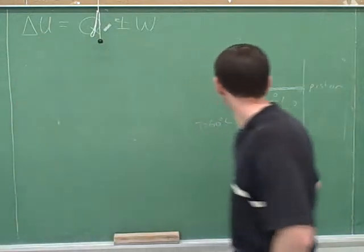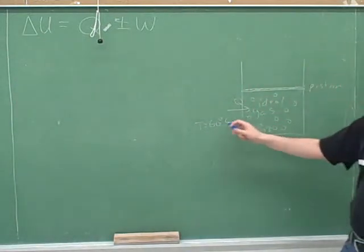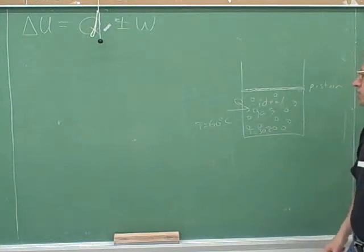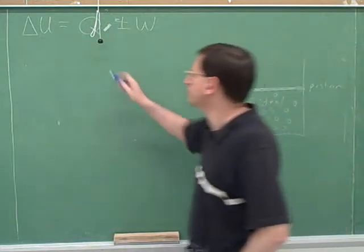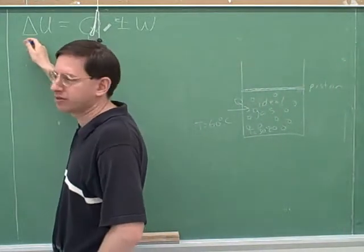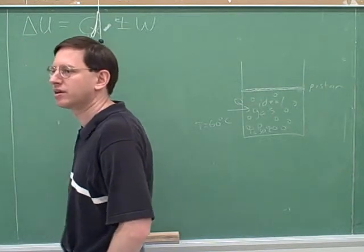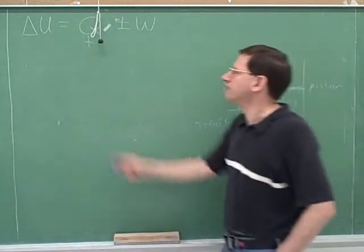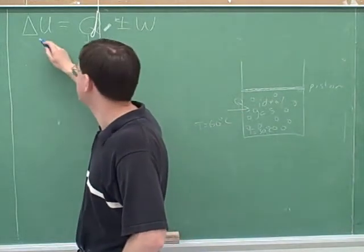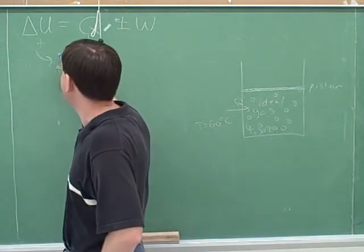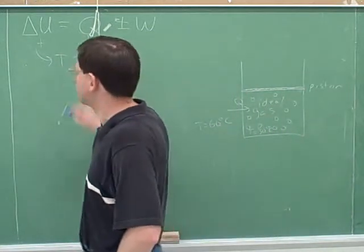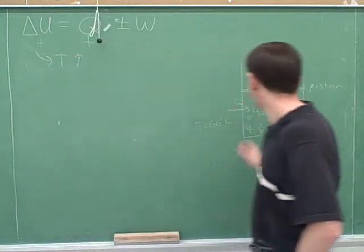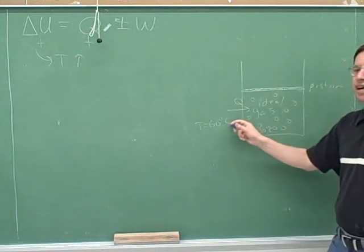So remember, in our example here, the gas was at 30 degrees Celsius and outside was at 60 degrees Celsius. So would Q here be positive or negative for the gas? Because heat is coming in. And notice that if Q is positive, would that tend to make delta U positive or negative? Positive. If we have a positive number on the right-hand side of the equation, that tends to give us a positive number on the left-hand side. And would that tend to indicate that the temperature is going up or down?